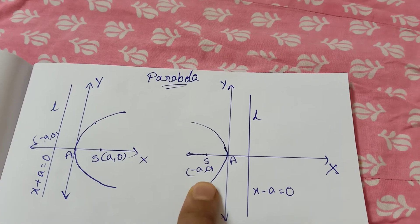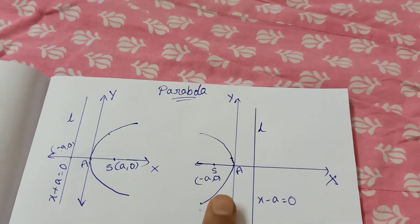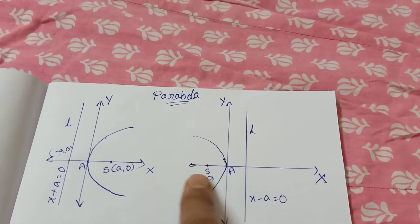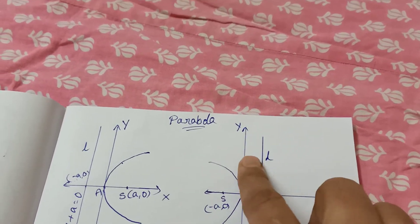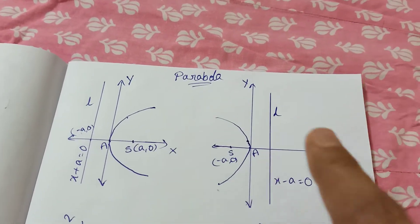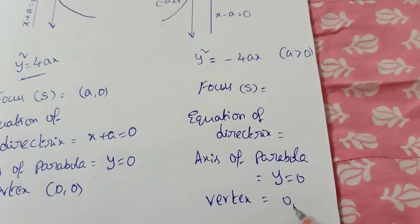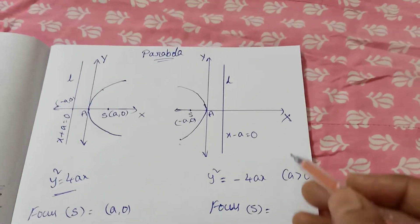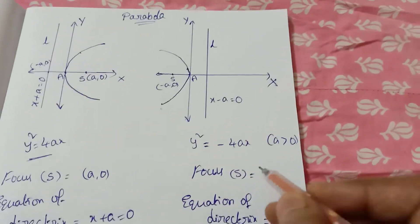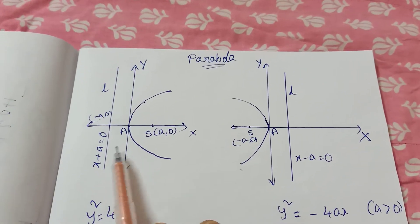For y squared equals minus 4ax, the focus is minus a, 0. The vertex is (0, 0). The equation of the directrix is x minus a equal to 0. The axis of the parabola is y equal to 0. These are the key properties for the left-opening parabola passing through the origin.